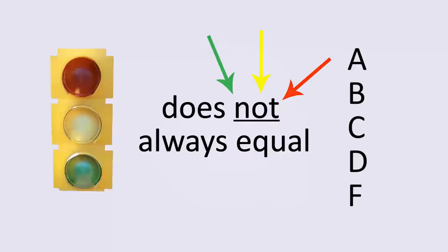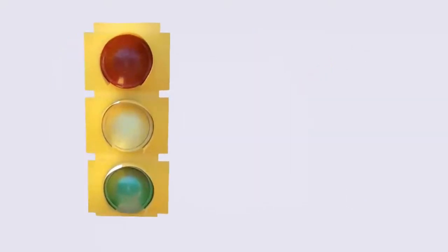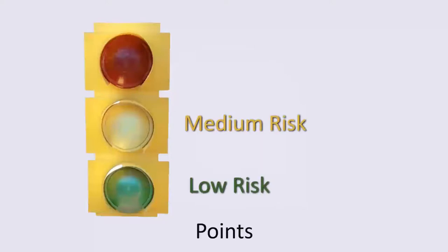While we're talking about the factors, for the first factor, points, your instructor sets a range for what grades they consider low risk, medium risk, and high risk of not succeeding in the class.